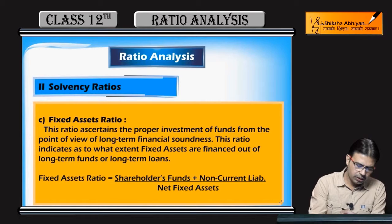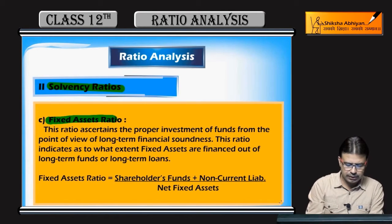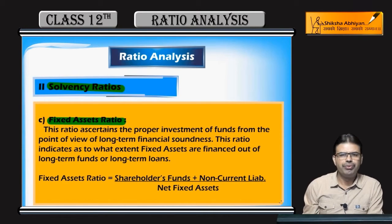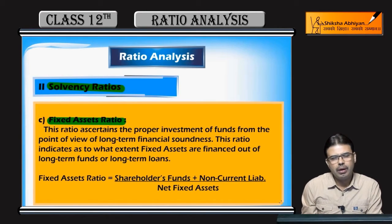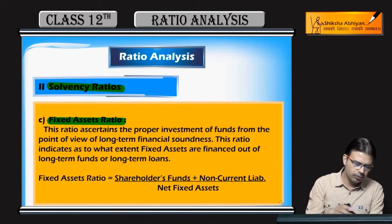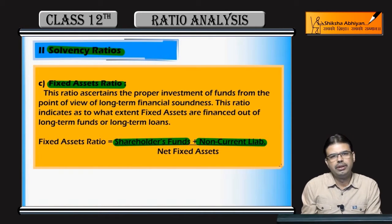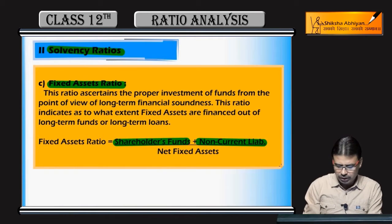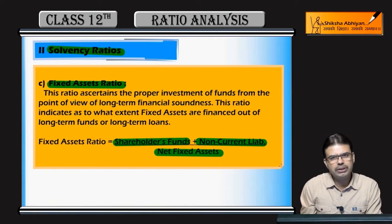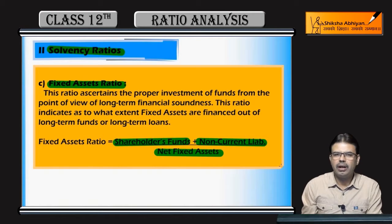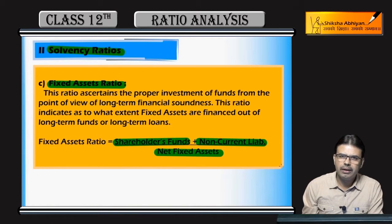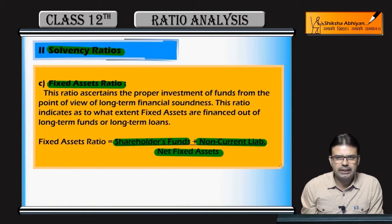Solvency ratios ka third part: Fixed Assets Ratio. Simple hai — fixed assets ka fixed liabilities ke saath kya relationship hai? Fixed liabilities mein do cheezein hain: shareholder funds aur non-current liabilities. To formula hai: shareholder funds plus non-current liabilities, divided by net fixed assets. Net fixed assets matlab fixed assets mein se depreciation ya return amount minus kar do.